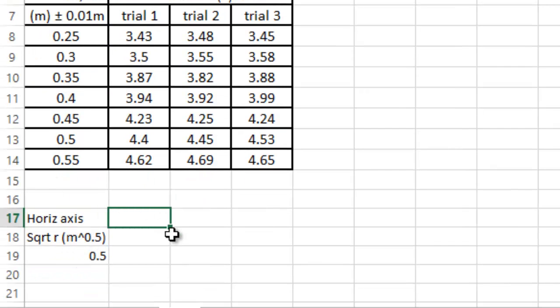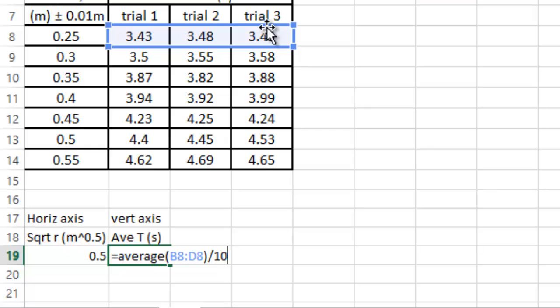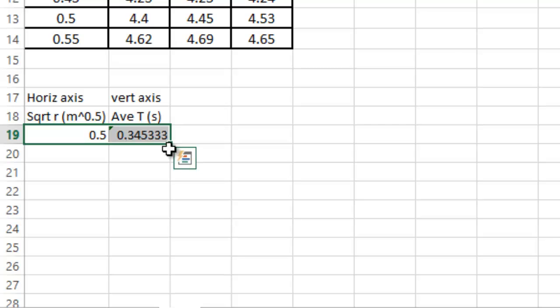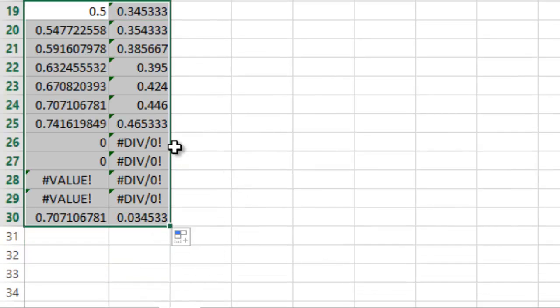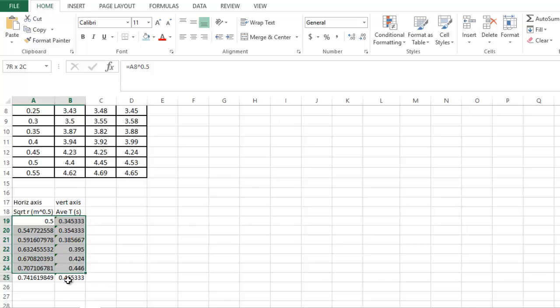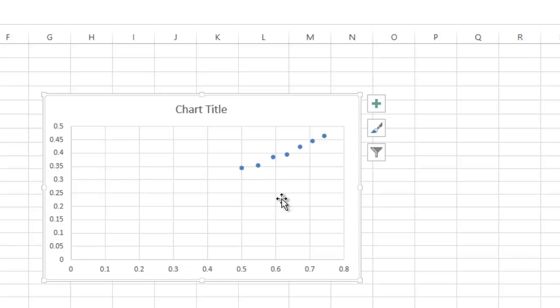For the vertical axis, we want the average T in seconds. And that will be equals average bracket, scan across those three numbers, close bracket, divide by 10, because there are 10 circles each. So, this right here will make our data. Get rid of these others down here. Don't need them.